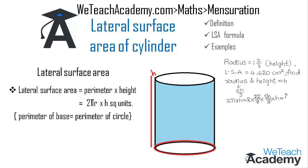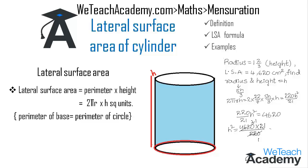By multiplying all the terms in the numerator we get (220/21)h². Now we equate this to the given lateral surface area of 4620, giving (220/21)h² = 4620. Transferring all terms to the right-hand side, h² = 4620 × 21 / 220. Simplifying, 21 × 220 = 4620, so h² = 21², which means h = 21 centimeters.